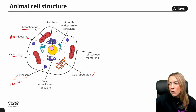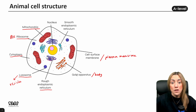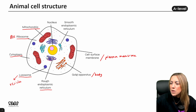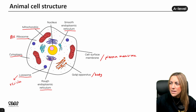We've got the Golgi apparatus, also known as the Golgi body. We've got the cell surface membrane, or plasma membrane, which is your phospholipid bilayer made out of phospholipids with proteins embedded and cholesterol. We've got the smooth endoplasmic reticulum, which looks very much like the rough endoplasmic reticulum, but smooth because there are no ribosomes on its surface.